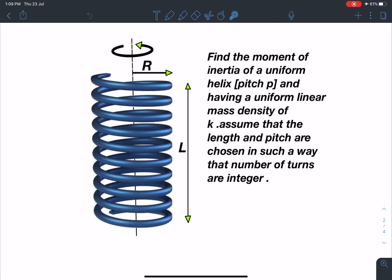Assume that the length and the pitch are chosen in such a way that number of turns are integers. So we're taking exact number of turns.